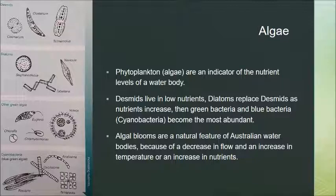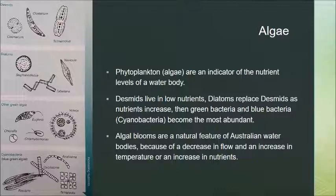Algal blooms are natural because Australia is a land of drought and flooding rain, with natural increases and decreases in flows and nutrient loads. However, with farming, changing water flows, and an increase in extreme weather events due to climate change, we're seeing an increase in algal blooms in our water systems.